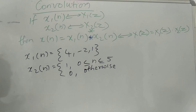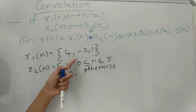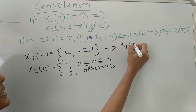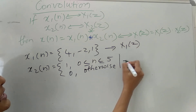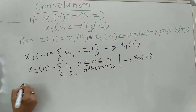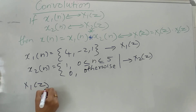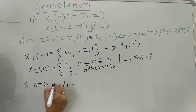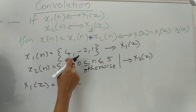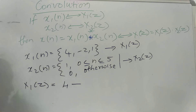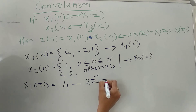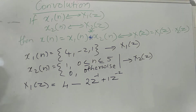Let's do a simple example. We are given X1 of N and X2 of N and we write their Z transforms. X1(Z) can be written as 4 into Z raised to 0, minus 2 into Z raised to minus 1, plus 1 into Z raised to minus 2.